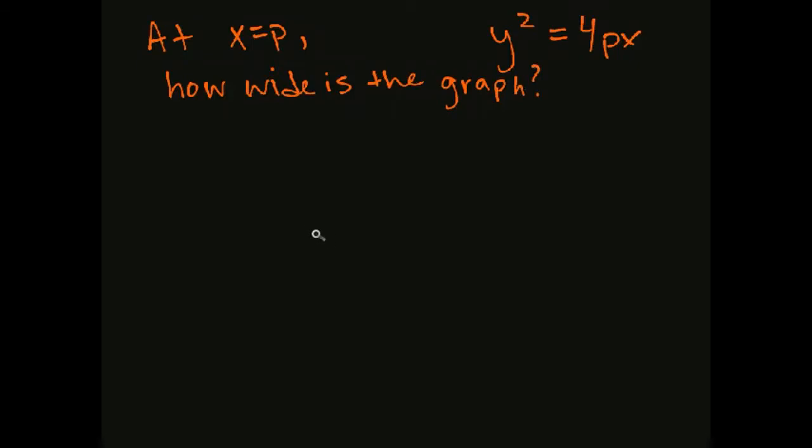Because that tells us what our focal diameter is. Well let's plug that in. We have x equal to p so y squared is 4p squared, so y is the square root of that so it's plus or minus 2p.